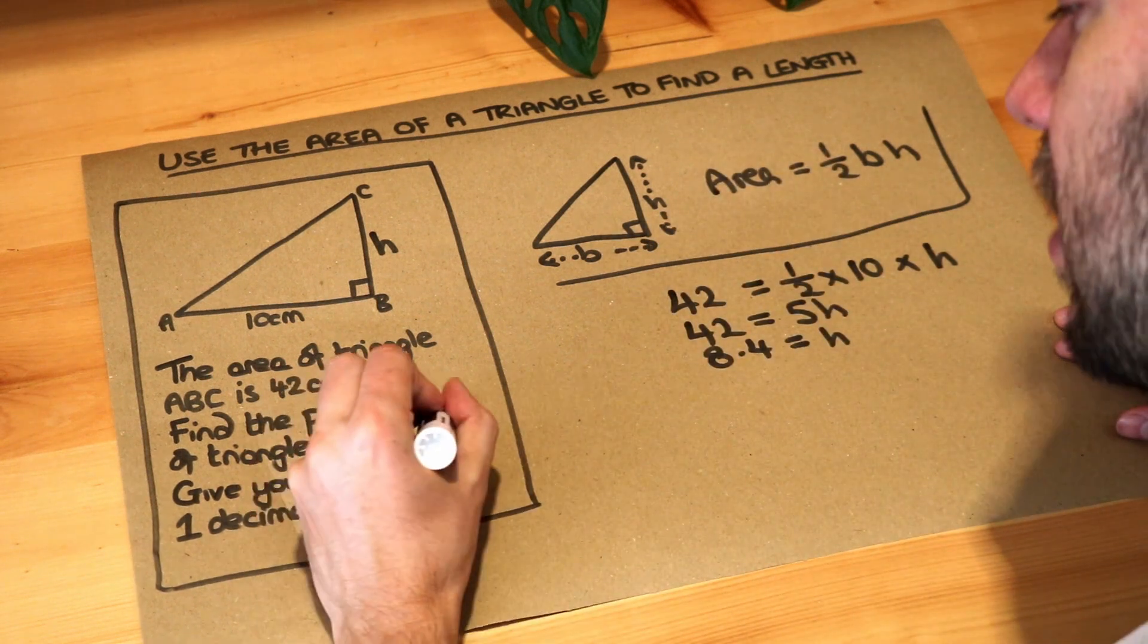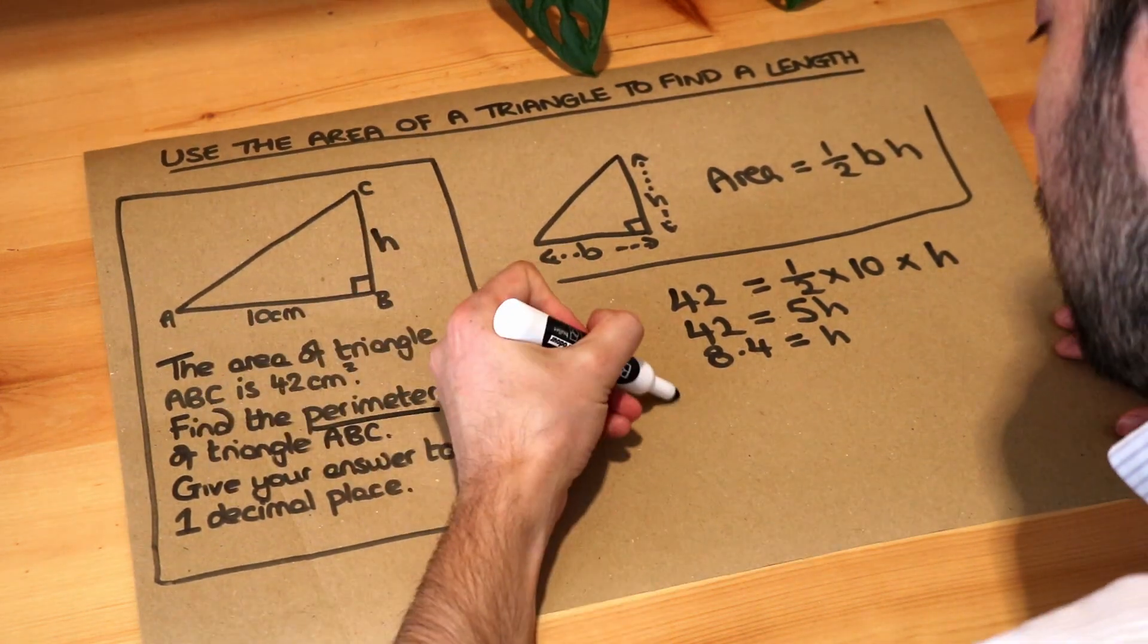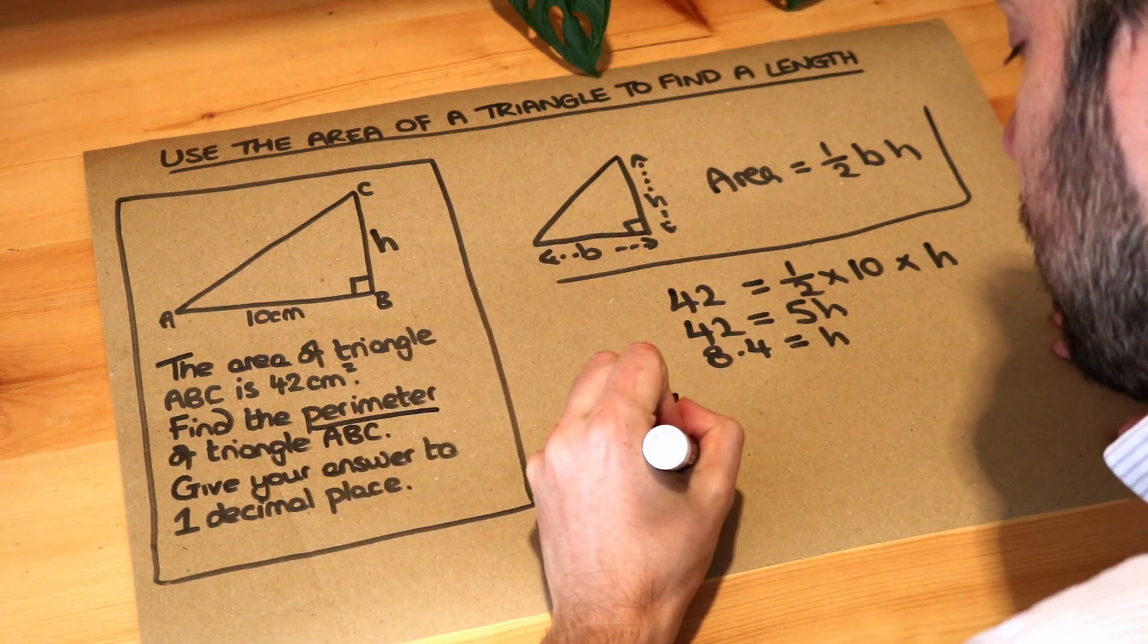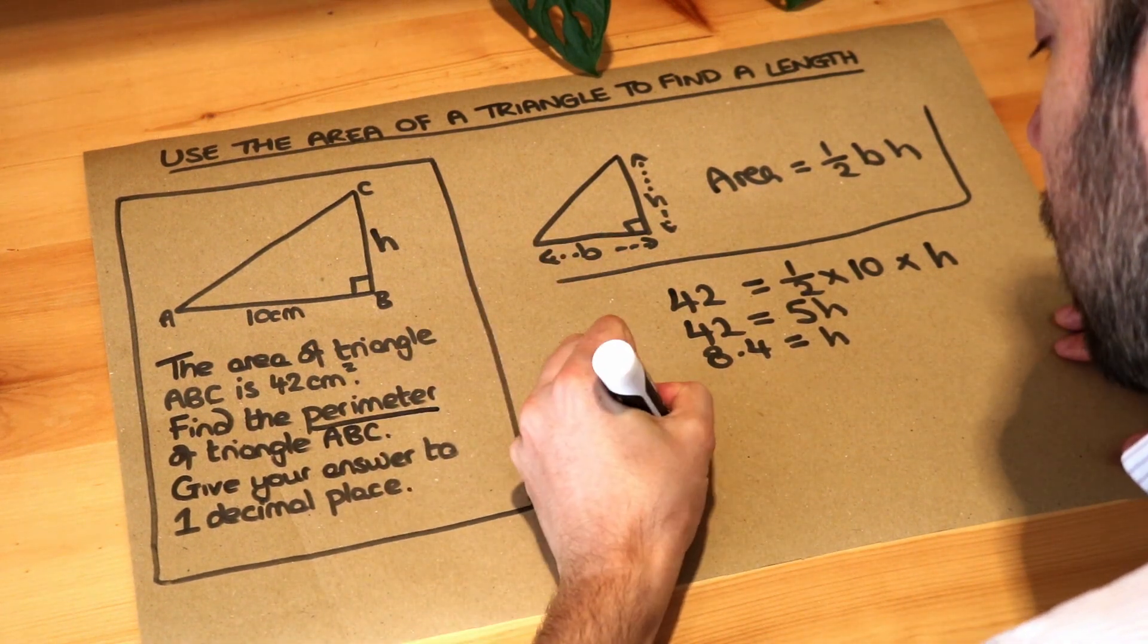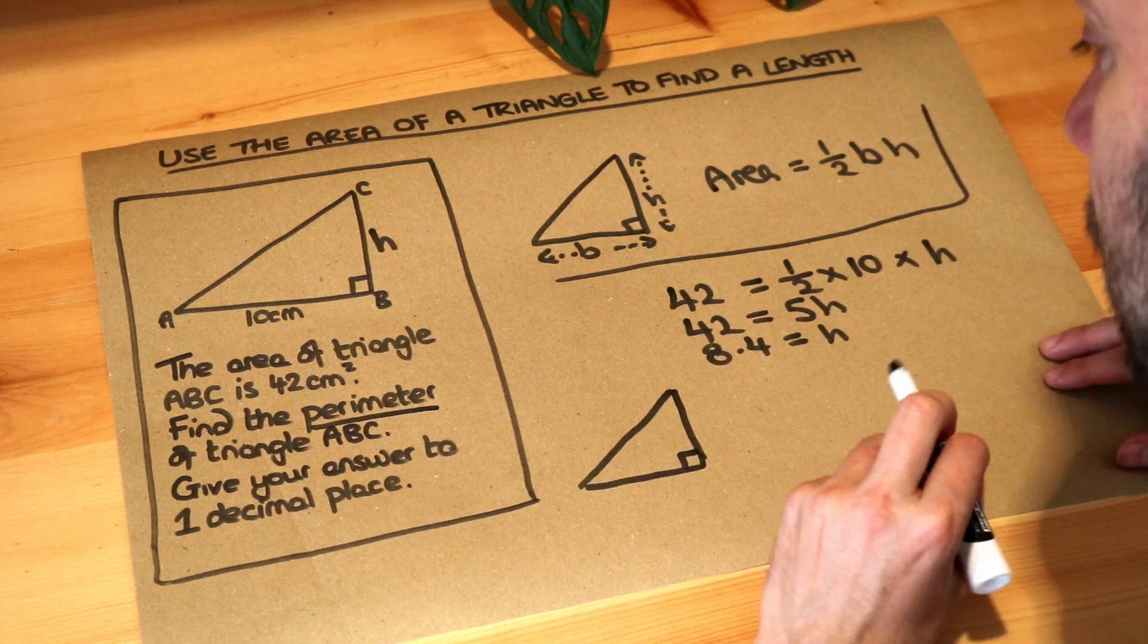But we ask for the perimeter of this triangle. So we need this length, this length, and we need to add on this length as well, the hypotenuse. So now we're going to have to use Pythagoras to get that third length. And if you don't know how to do Pythagoras theorem, please look at my previous videos on that first.